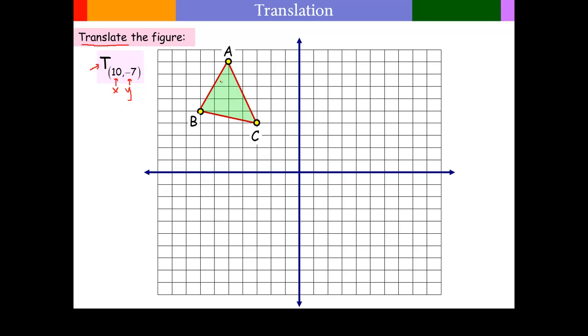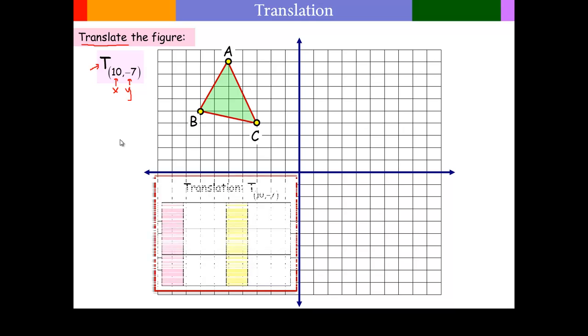I'm going to put points on the vertices of this triangle and we're going to fill in a little table. This table is going to take our original points A, B, and C, and it's going to translate it into new points A prime, B prime, and C prime. Each of these points are going to translate by this amount right here, this 10, negative 7. Let's take a look what that means.